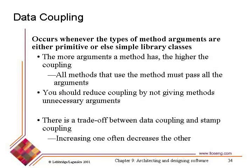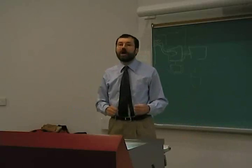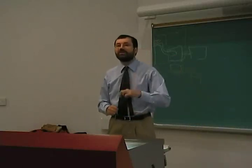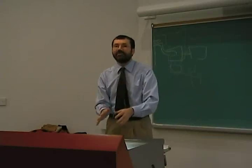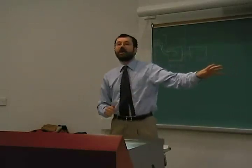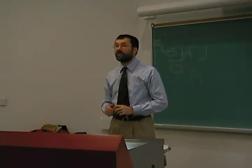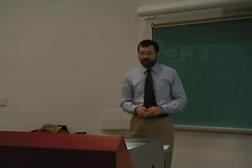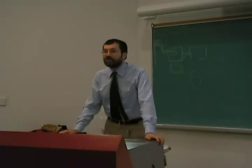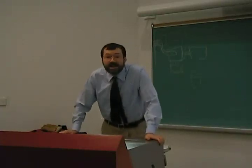There's a trade-off between data coupling and stamp coupling. Stamp coupling says sometimes you need it, but you can get rid of it by adding arguments — passing two string objects instead of one employee object — which increases data coupling. But that's fine, because stamp coupling tends to be stronger on average than data coupling. Having two simple arguments would be a better choice than having one unnecessary complex employee object. But it would be silly to pass the employee's home address and phone number since the emailer doesn't use that data.